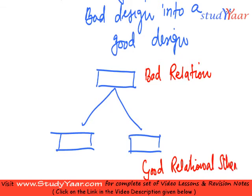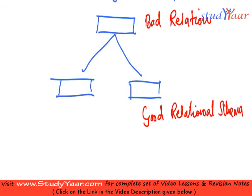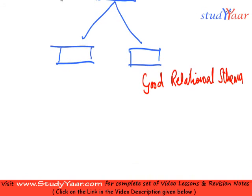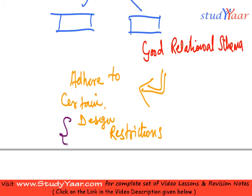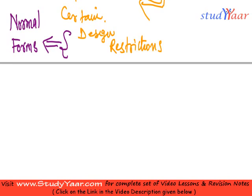Good relational schemas such that these schemas adhere to certain design restrictions. I call these quality restrictions or design restrictions as normal forms. Normal forms are arranged in a hierarchy, like we have grades — for example, B minus, then B, then B plus.